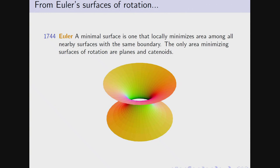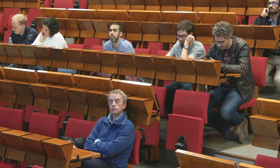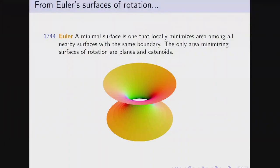The subject of minimal surfaces is quite old. The notion was first mentioned by Euler in 1744. On an intuitive level, a minimal surface is a surface with the property that if you take some domain with boundary inside such a surface — sitting in some Euclidean space, maybe R³ or higher — and you perturb it in the normal direction, the area can only increase but cannot decrease. Euler gave an argument that the only area-minimizing surfaces of rotation are planes and catenoids.